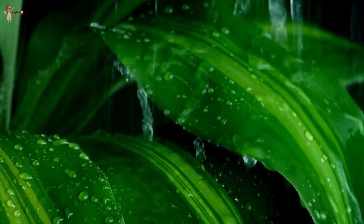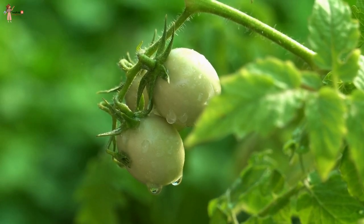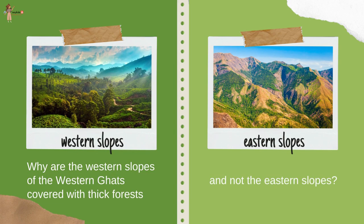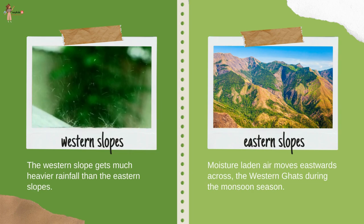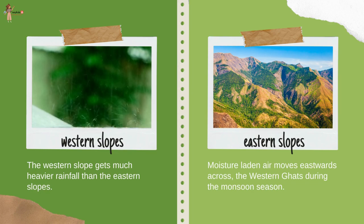In India, almost all rainfall is brought in by the advancing southwest monsoon and retreating northeast monsoons. Areas of heavy rainfall have denser vegetation compared to areas of less rainfall. The western slopes of the Western Ghats are covered with thick forests because they receive much heavier rainfall than the eastern slopes, as moisture-laden air moves eastward across the Western Ghats during the monsoon season.